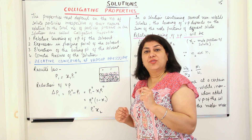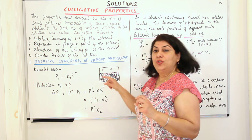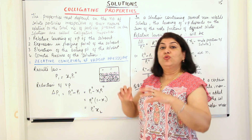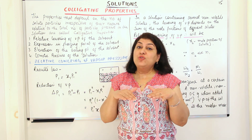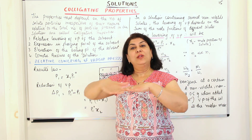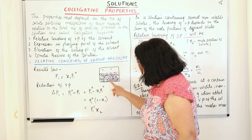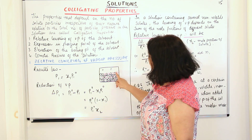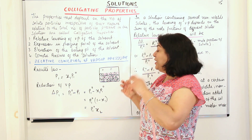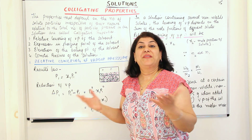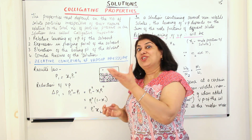Now what happens when you add a solute to this solvent, to this liquid? When you add a solute, the molecules of the solute also start occupying some of the surface area of the solution. The solvent had all the area available to it to evaporate. But now let us say one-fourth of the surface is used up by molecules of the solute. So only three-fourth of the surface area is available to the molecules of the solvent. As a result, the vapor pressure will decrease.